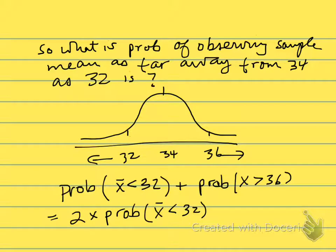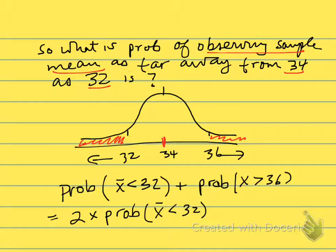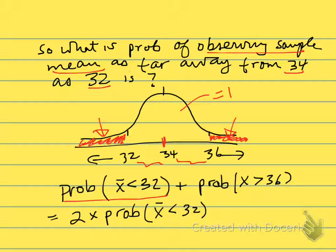We can then ask: what's the probability of observing a sample mean as far away from 34 as 32 is? We got a sample mean of 32 and our null hypothesis is that the mean is 34. So we test the hypothesis by asking what's the probability of getting something as far away as 32 — two units from 34. We do a two-sided test, looking at both tails. That's the probability that X-bar is less than 32 plus the probability that X-bar is greater than 36.